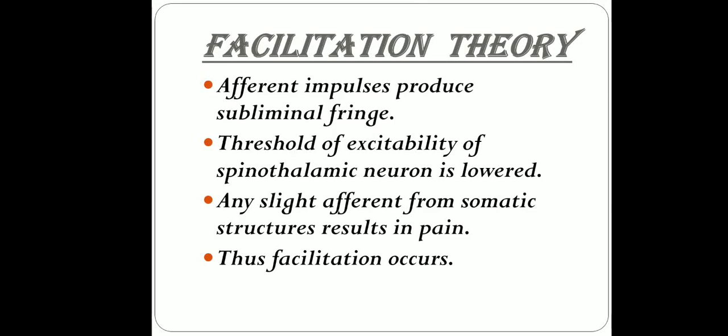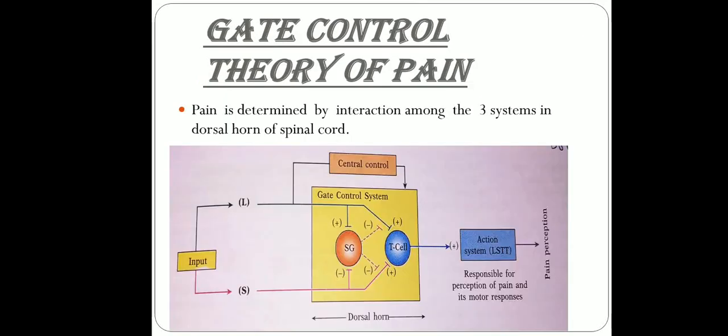Now, moving on with the gate control theory of pain. In case of gate control theory of pain, the pain is determined by interaction among three systems in dorsal horn of the spinal cord. These three systems are T cells, substantia gelatinosa cells, L fibers, and S fibers. The T cells cause activation of the lateral spinothalamic tract which results in pain.